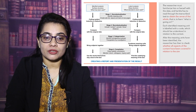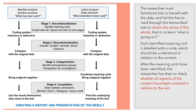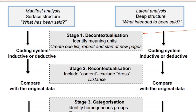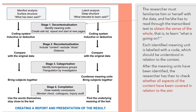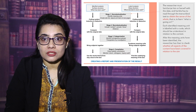Now I am telling you the procedure of conducting content analysis. This picture shows what the steps or stages in the process are. The very first stage in content analysis is decontextualization. The researcher must familiarize themselves and read through the transcribed data to obtain the sense of the whole — basically developing the meaning from the data to learn what is going on in the situation. Each identified meaning unit is labeled with a code, which should be understood in relation to the context.